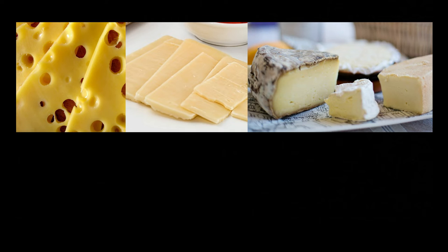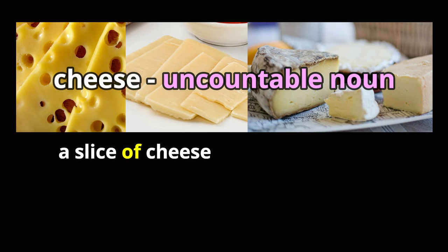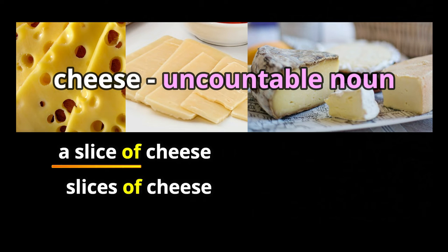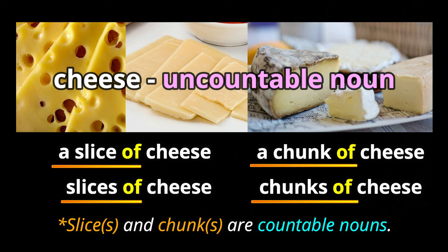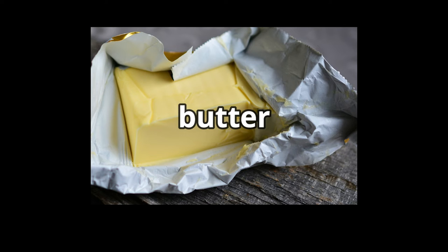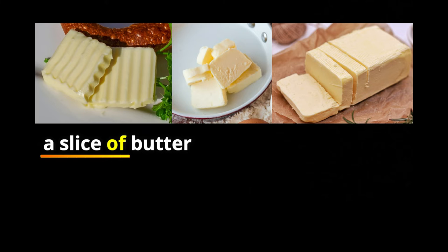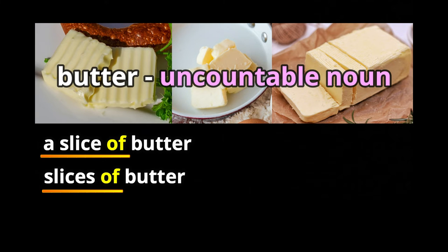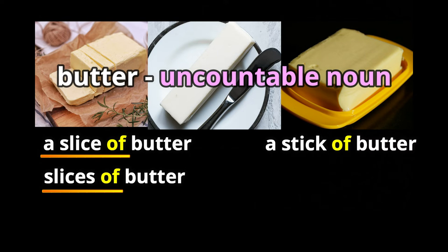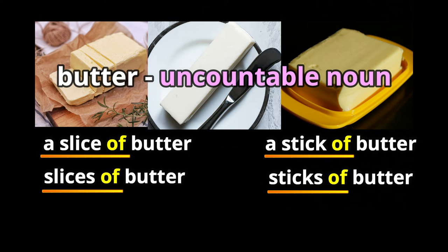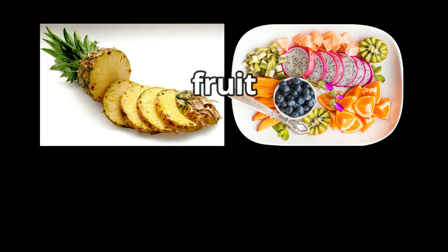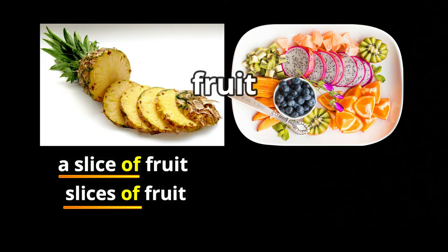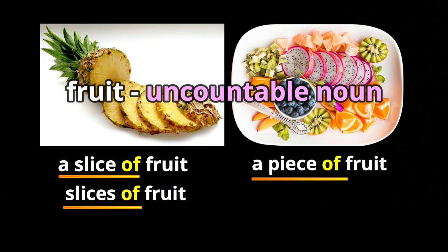We can also use the countable word 'slice' for things like cheese — a slice of cheese, or slices of cheese. With cheese, the word used a lot is 'chunk' — a chunk of cheese or chunks of cheese. How about butter? We can count a slice of butter, or slices of butter, or the whole thing — a stick of butter or sticks of butter. We also use 'slice' and 'piece' for fruit — a slice of fruit, slices of fruit, a piece of fruit, or pieces of fruit.